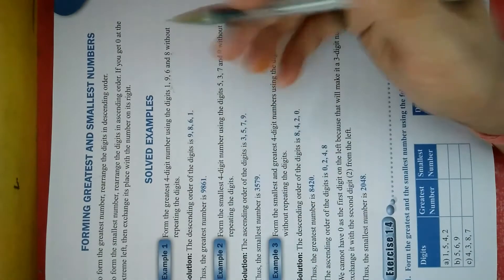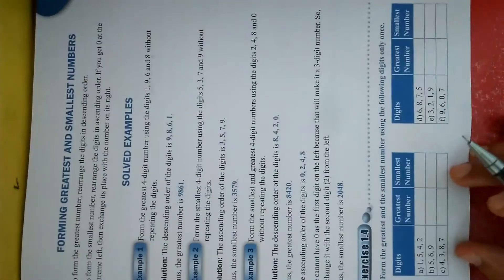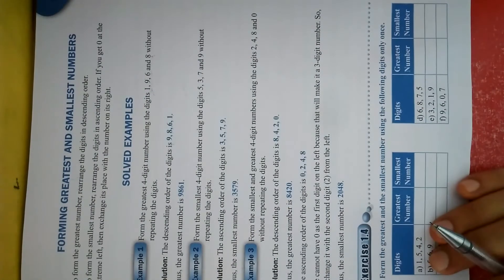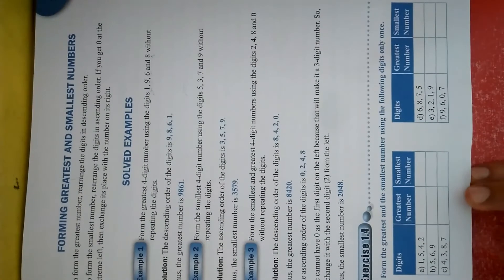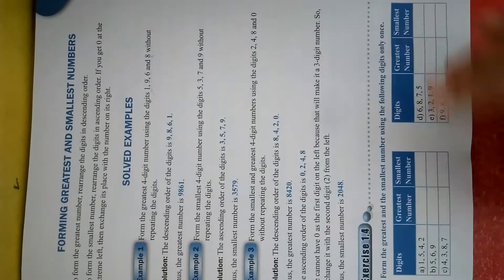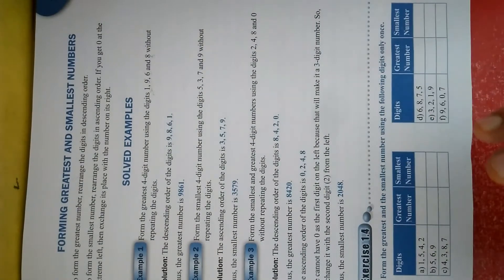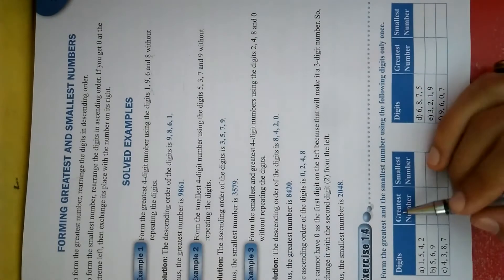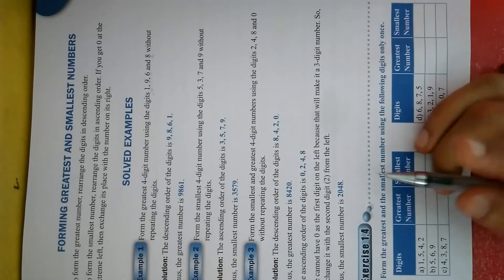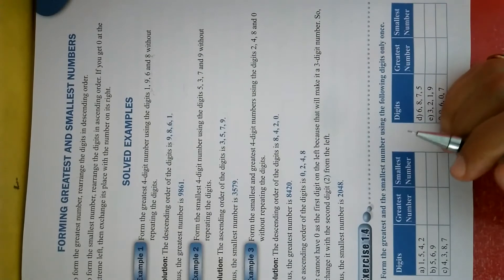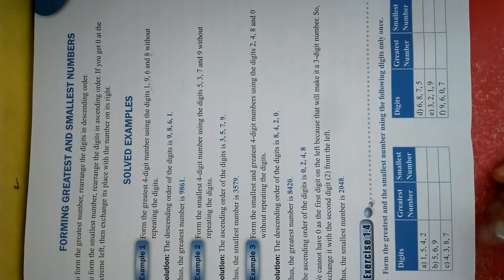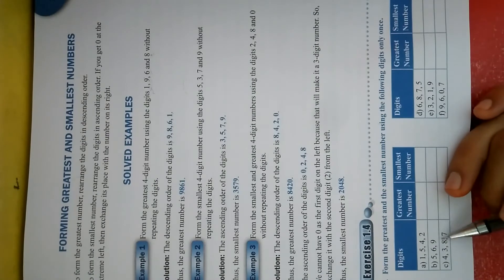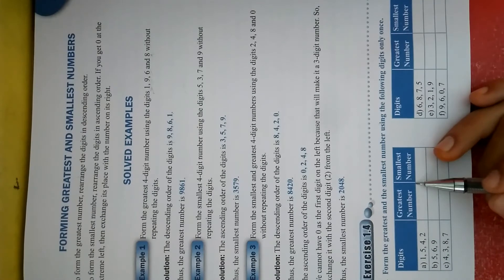So in exercise 1.4, we will first learn to make the greatest number, then we will move to the smallest number. Write the class work and date in your book — we will do the questions in the book. The question is to form the greatest and smallest numbers using the following digits. We will not use commas because we are forming a number. The first question gives you digits: 1, 5, 4, 2. You need to form the greatest number — meaning go from biggest to smallest.